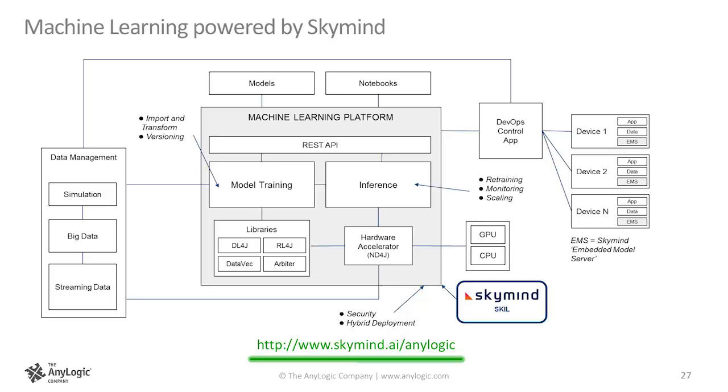We want to work with doers — people that want to do something. Please go to skymind.ai/AnyLogic, put in the contact form, and we'll get you early access to what we've already built.